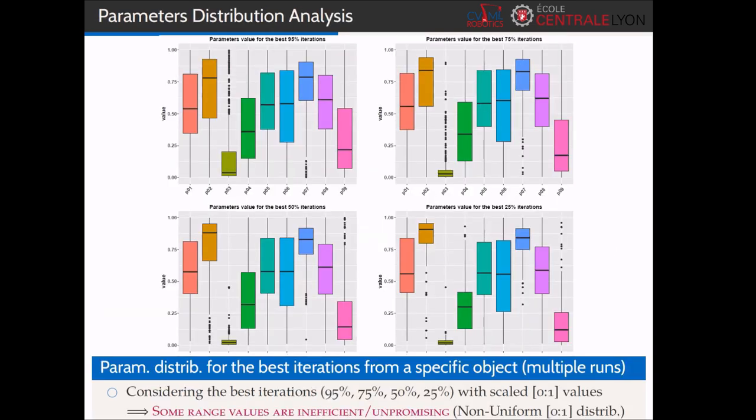With the data stored in the episodic memory, the robot can now perform a posterior analysis of its experiences. Indeed, it can extract the normalized value of all parameters tested during the best iterations for specific object runs. When considering almost all iterations, like the best 95% on top left, we can check that the Bayesian optimization is covering quite well the full search space. However, when you focus on the most successful iterations, like the best 25% on the bottom right, you can see that some parameters' value areas are never exploited, meaning that there are unpromising regions.